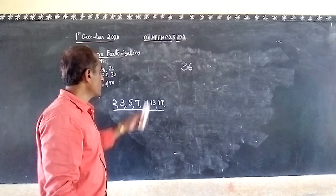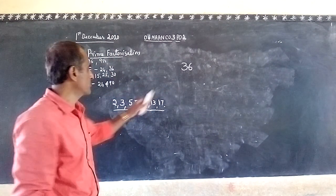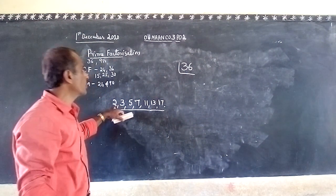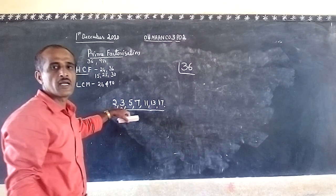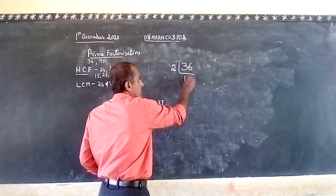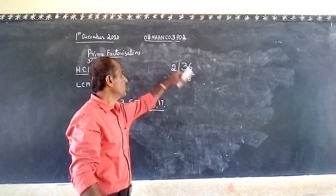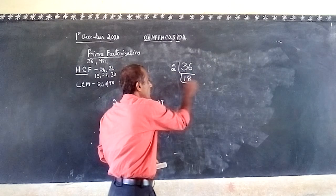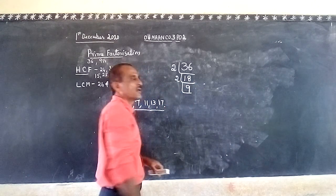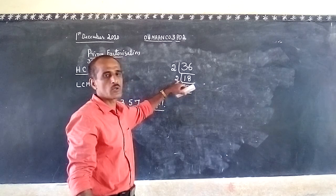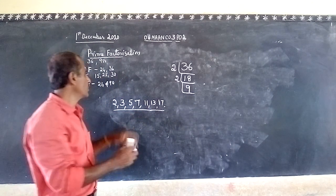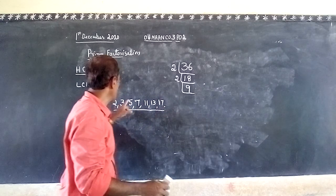To find prime factors, you have to keep dividing by prime numbers starting from the least. For 36, start with 2. Can 36 be divided by 2? Yes — 36 divided by 2 is 18. Now divide 18 by 2: 18 divided by 2 is 9. Can 9 be divided by 2? No, it cannot be divided by 2 completely, so you move to the next prime number.